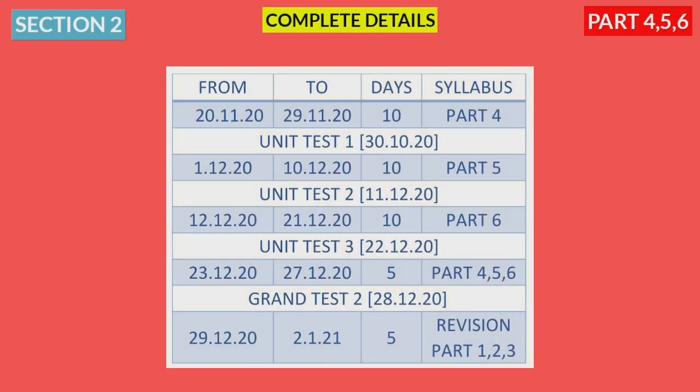Next, in Section 2 on the schedule, after completing the first 3 parts in Section 1, you will complete the next Parts 4, 5, 6. Then a unit test. After completing Parts 4, 5, 6, you will do a 5-day revision. Then, following the Parts 4, 5, 6 schedule, you will complete a grand test covering Parts 1 through 6. That completes Section 2.